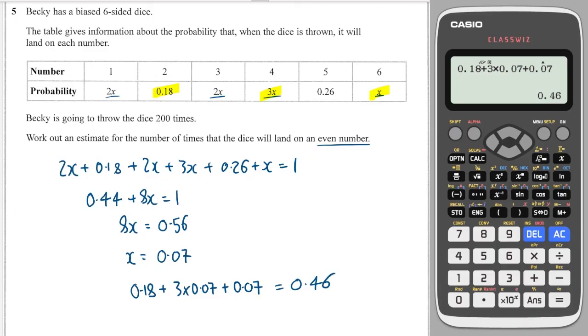And then finally, to work out how much you would expect, you take the number of turns that you're going to do. Multiply it by the probability. And this gives you 92.